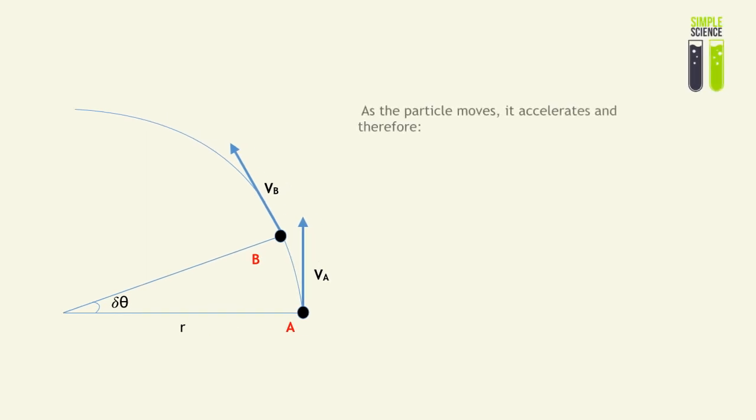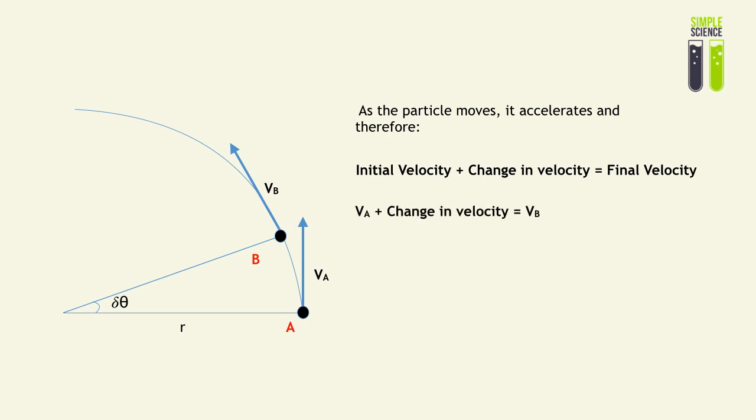As a particle moves, it accelerates because it's changing direction constantly. We know that for sure that velocity as a vector, the initial velocity plus the change in velocity will give you the final velocity. Our initial velocity is VA, and our final velocity is VB. So the change in velocity is going to be delta V. VA plus delta V gives you VB.